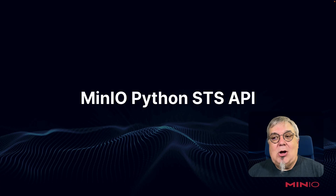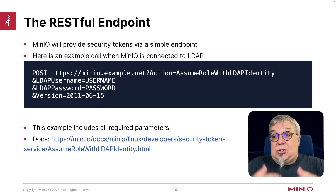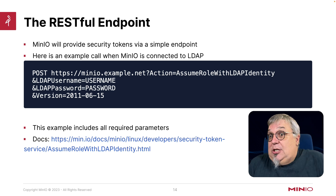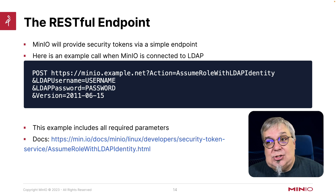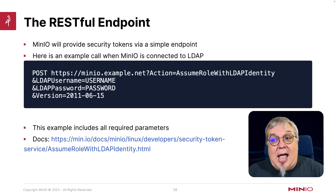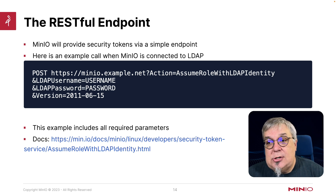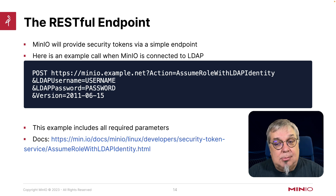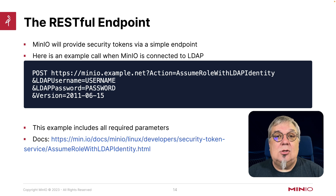Let's talk about the MinIO Python STS API. The STS API is fairly easy to use — it's a RESTful endpoint, so you can just call HTTPS. MinIO provides these security tokens through that endpoint. The example call shown here is a simple POST to HTTPS, calling MinIO itself using assume role with LDAP identity. You need to hand in the username, the password, and the version at a minimum. You can also add a policy statement to access a subset of the policy. Full documentation is available, and the documentation link is also in the description on this video.